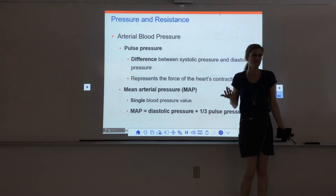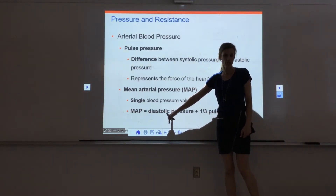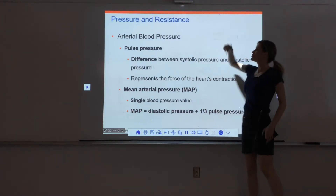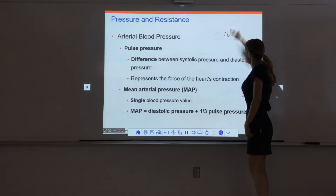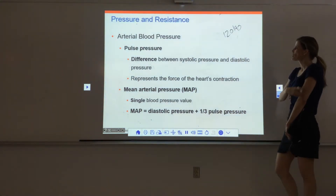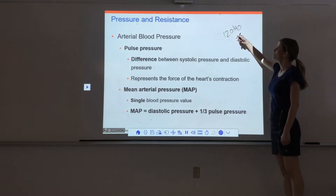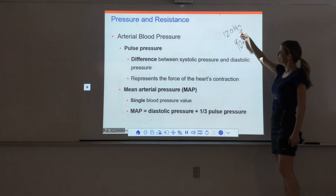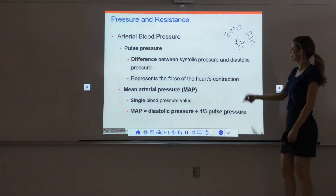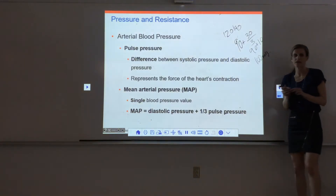It's easier because you don't have to calculate a mean arterial pressure, but you should know that it exists. The mean arterial pressure is found using: diastolic pressure plus one-third of the pulse pressure. For example, if blood pressure is 120 over 90, the diastolic is 90, and the pulse pressure is 30 — so one-third of 30 is 10. Therefore the mean arterial pressure would be about 100 millimeters of mercury.